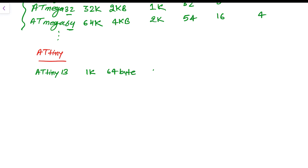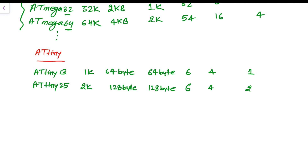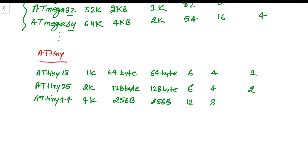ATtiny 13 has 1KB flash, 64 bytes data RAM, 64 bytes EEPROM, 6 I/O pins, 4 ADC channels, and 1 timer. ATtiny 25 has 2KB flash, 128 bytes RAM, 128 bytes EEPROM, 6 I/O pins, 4 ADC channels, and 2 timers. ATtiny 44 has 4KB flash, 256 bytes RAM, 256 bytes EEPROM, 12 I/O pins, 8 ADC channels, and 2 timers.